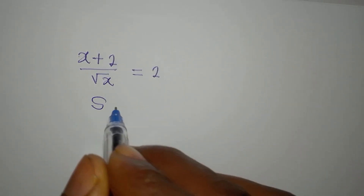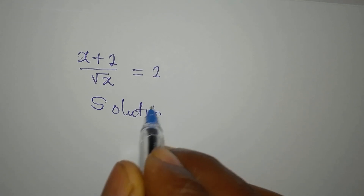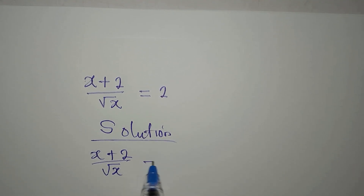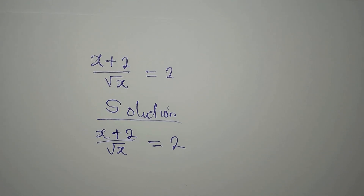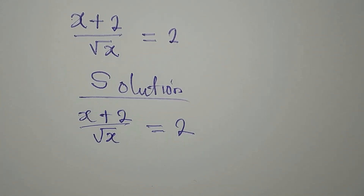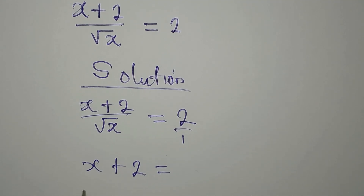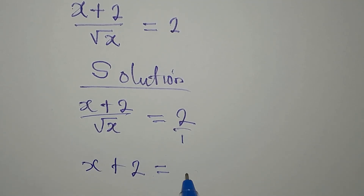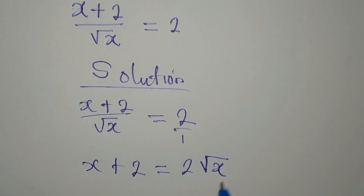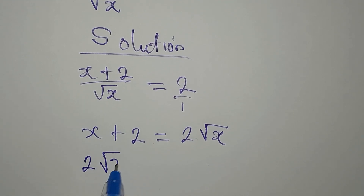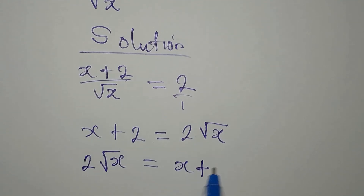Let's solve this problem. We have (x + 2) over square root of x equals 2. The first step is to cross multiply, so we get x + 2 equals 2 times square root of x, or we can write it as 2 square root of x equals x + 2.